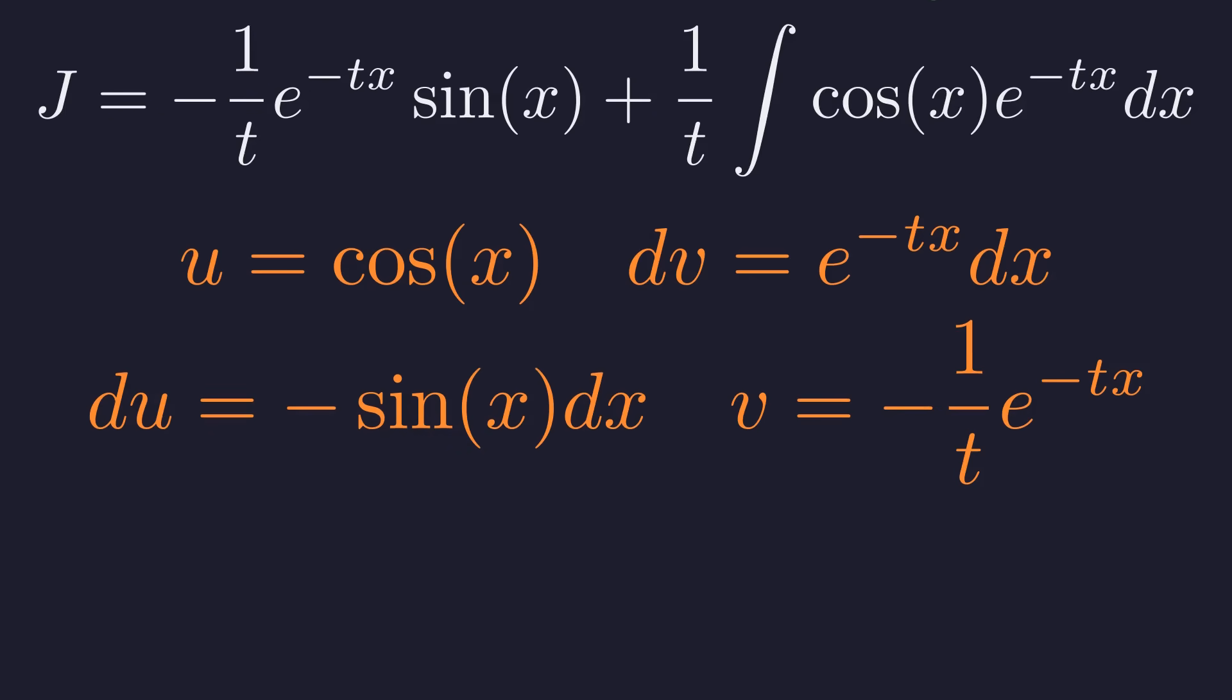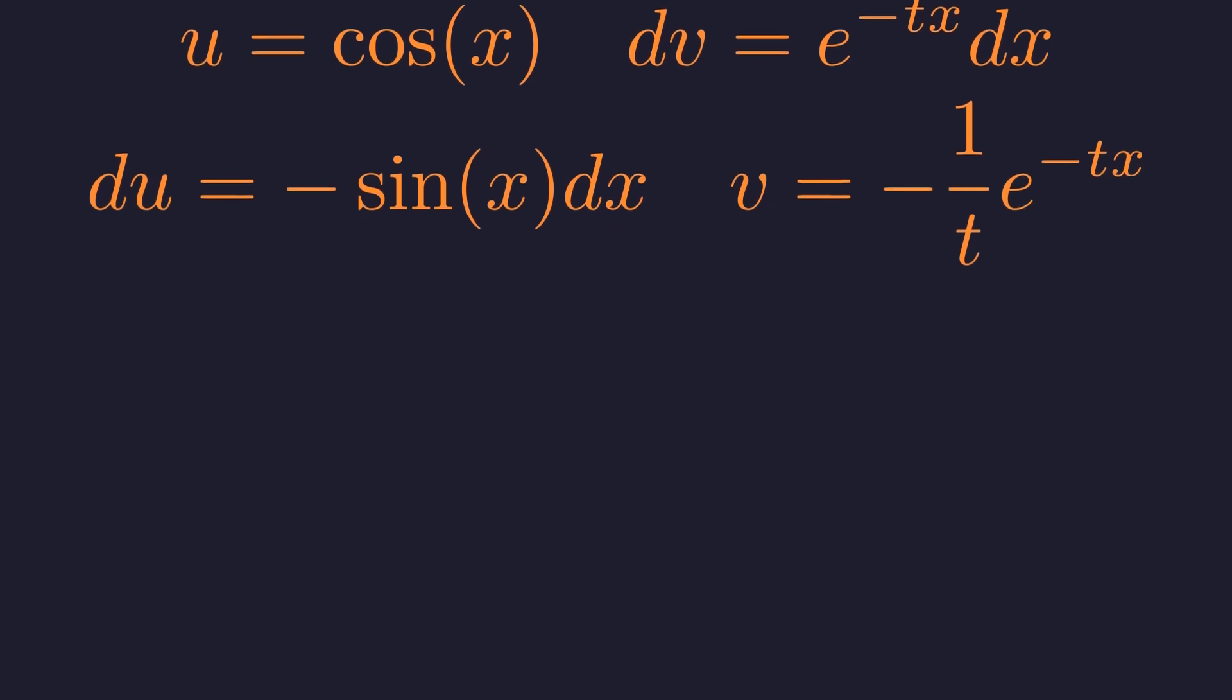This time u is cosine of x. Substituting these into our expression for j gives us this rather long equation. After distributing the 1 over t term and simplifying the signs, we get this. Now notice something incredible. The integral on the right is the same as our original integral, j. So we can substitute j back into the equation. We've created a recursive relationship.